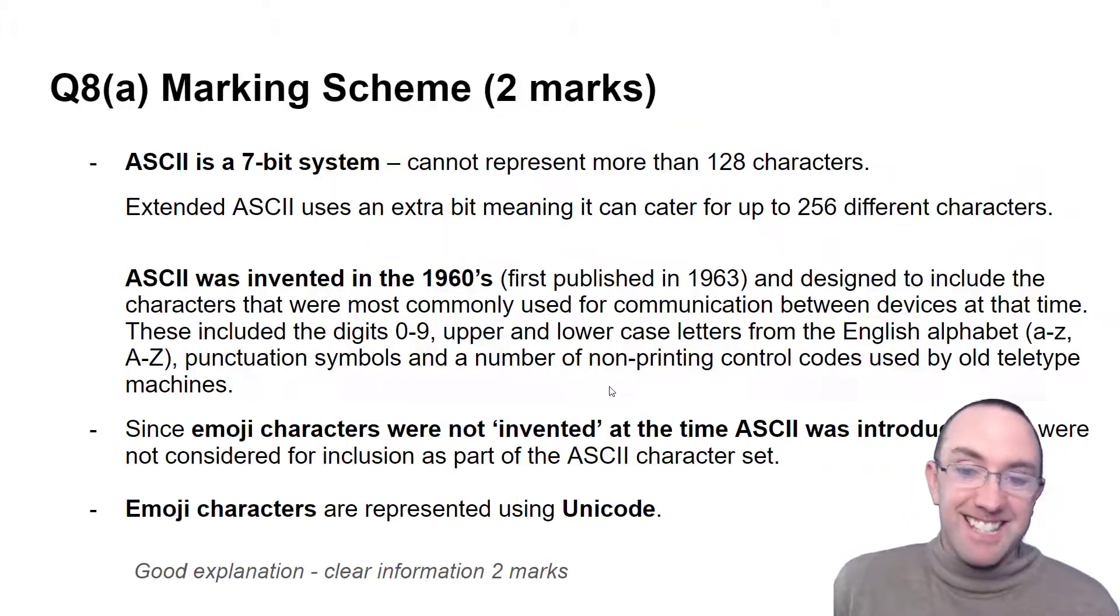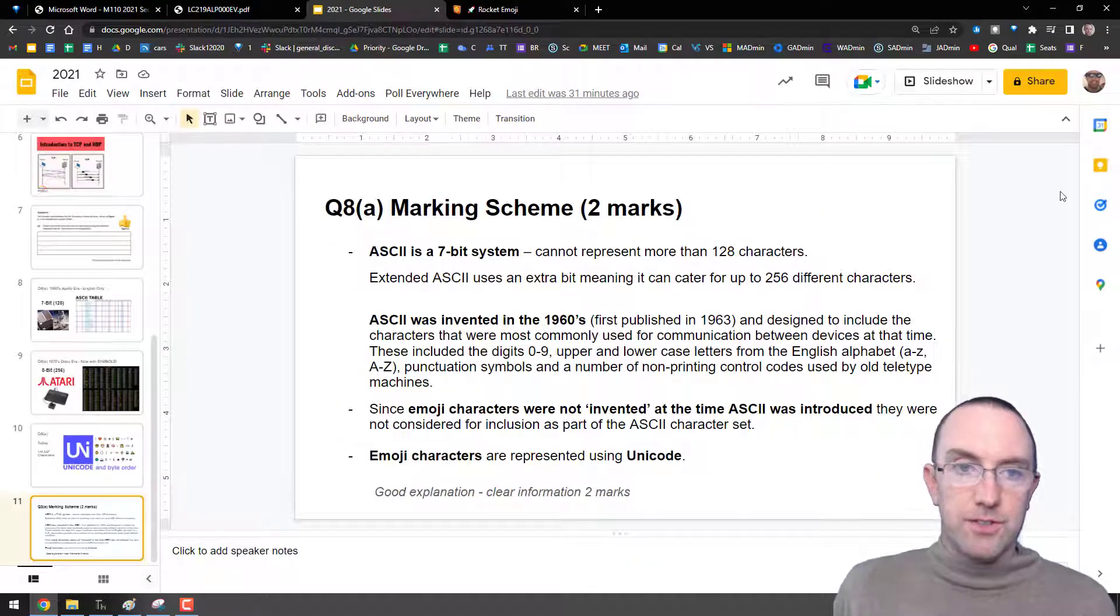But for the exam purposes all you got to say is it's a seven-bit system, there were only 128 characters you could fit in it. So I don't think even all the emojis would even fit in ASCII, and there's a lot of emojis. Also ASCII comes from the 60s way before emojis, so they weren't invented so they couldn't possibly be in ASCII.